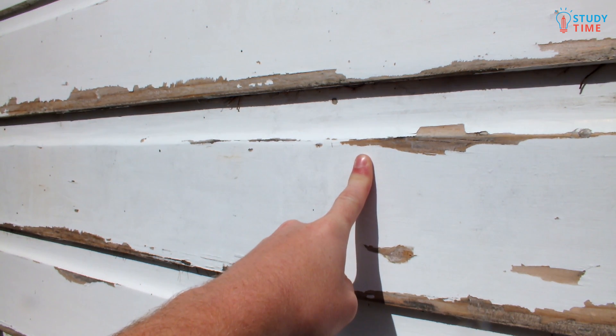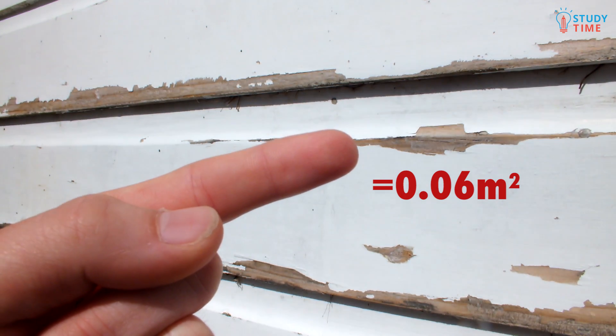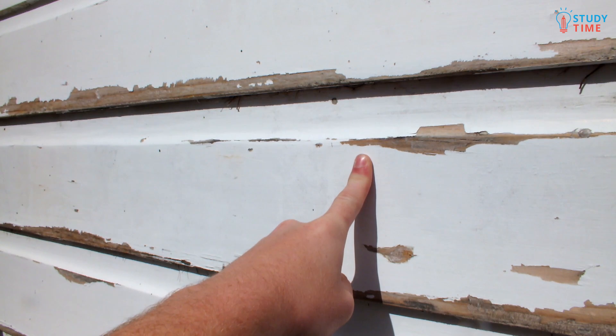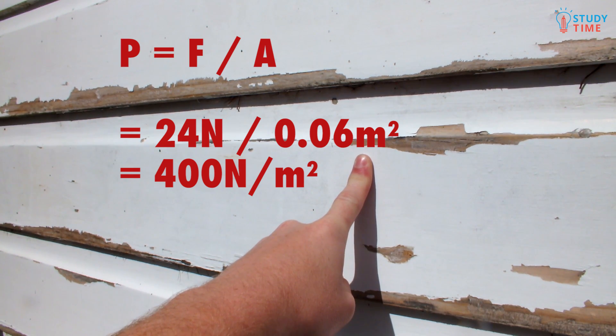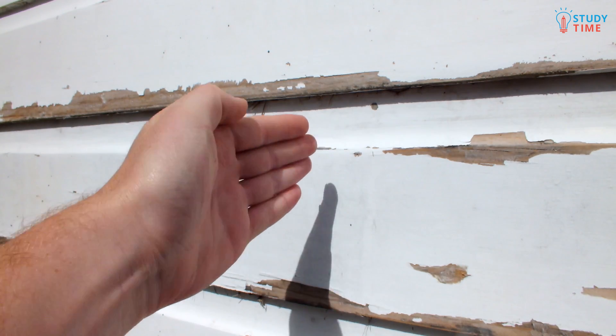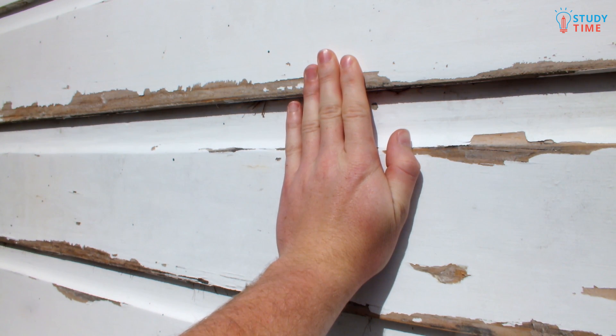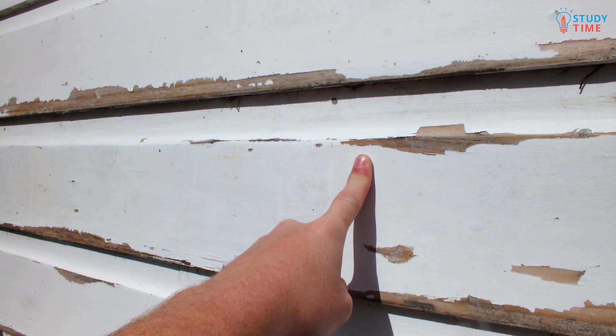If I applied a force of 24 newtons to a wall using my finger with an area of 0.06 meters squared, the pressure against the wall would be equal to P equals F divided by A equals 24 newtons divided by 0.06 meters squared equals 400 newtons per meter squared. We'd read this as saying, for every square meter of wall, there is a force of 400 newtons. Now think what the pressure would be if I applied the same force but used the area of my whole hand. Pressure is useful because a force on a big area creates a smaller pressure than the same force on a smaller area.